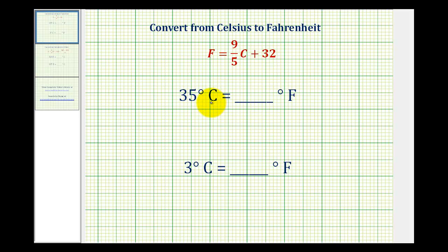To convert temperature given in Celsius to Fahrenheit, we can use the following equation, where C represents the temperature in Celsius, and F represents the temperature in Fahrenheit.